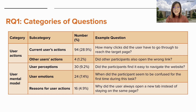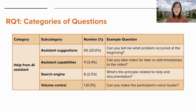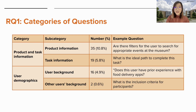In total, we collected a dataset of 325 questions, which were grouped into five categories and 13 subcategories. The first category is user actions — what the user did, such as how many clicks they made or what other users did to see if a problem was recurring. The second is user mental model — the user's perceptions, emotions, and reasons for certain actions. The help from AI assistant category contains questions asking directly for suggestions about usability problems, the capabilities of the assistant, or using it as a search engine or to change recording volume. The last two categories are product and task information and user demographics, mostly covering background information on the task and inclusion criteria.